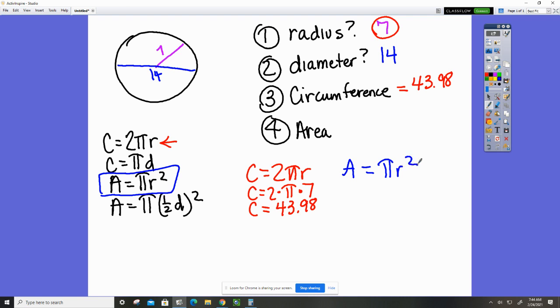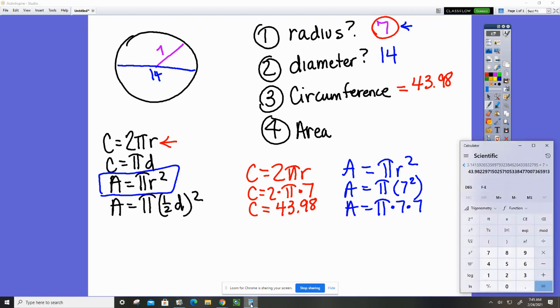I'm going to again substitute in the radius. A equals pi times seven squared. If you do not know what seven squared is, you're just going to put pi times seven times seven, because seven times seven is seven squared. You'll go back to your calculator. You will do seven, oh let's just clear everything first, seven times seven times pi equals...